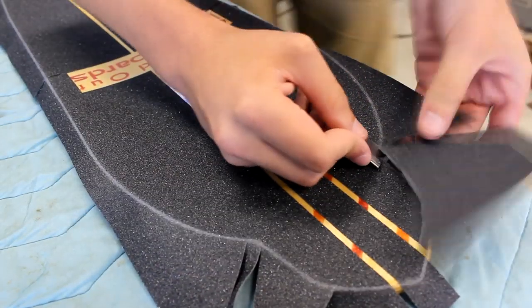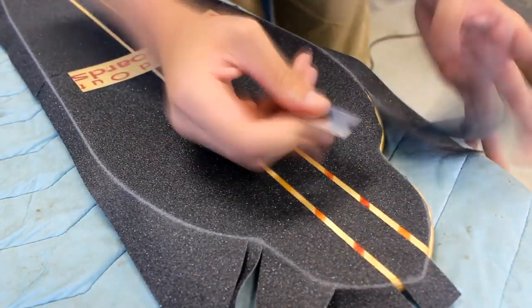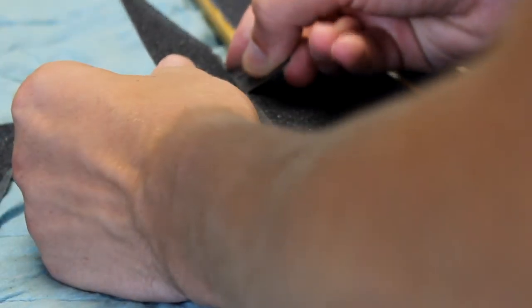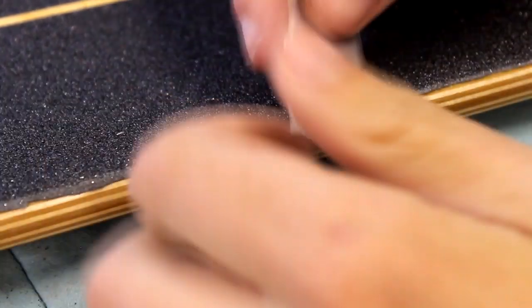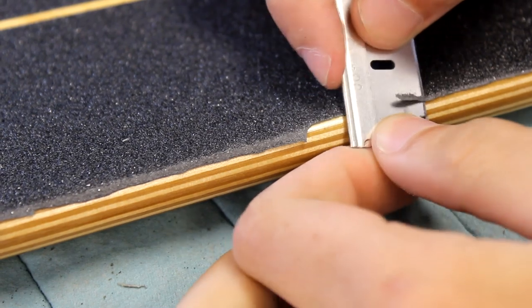Now you could use a razor to cut the grip tape off the edge of the board. The more continuous the cutting motion is, the cleaner your final cut will be. If you don't cut in flowing motions, you will end up with spots like these which you should clean up afterwards with your razor.